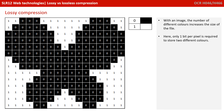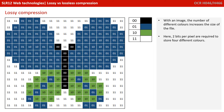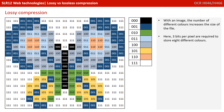Let's start by looking at an image. With an image, the number of different colours increases the size of the file. Here, we only need one bit per pixel to store two different colours, because a zero can represent black and one can represent white. Here, we see we're now requiring two bits for each pixel to store a combination of four different colours. And now we're requiring three bits for every pixel in order to store one of eight possible colours, and this is known as the colour depth.